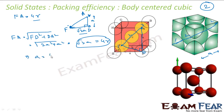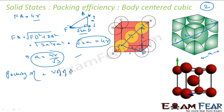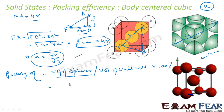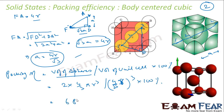With a = 4r/√3, packing efficiency = volume of spheres / volume of unit cell × 100 = 2 × (4/3)πr³ divided by (4r/√3)³, multiplied by 100. This gives 68%. So the packing efficiency of BCC is slightly less than FCC: BCC is 68% versus FCC at 74%.